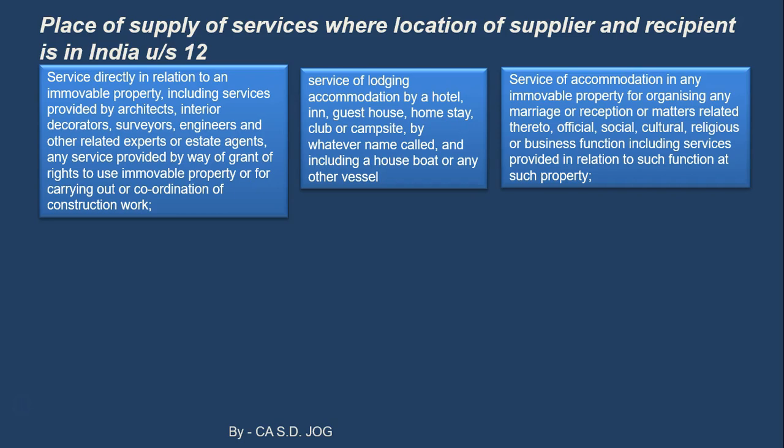We are combining these three different services because the logic is common. The first is regarding immovable property — a building, bungalow, land — and related services like architect, engineer, surveyor, interior decorator, etc. The second is about lodging and the third is also about accommodation in an immovable property like a lawn or reception hall. What will be the place of supply for all of these?